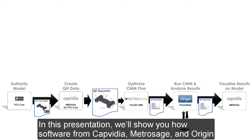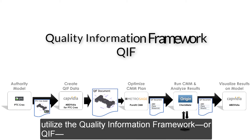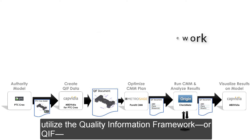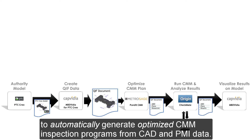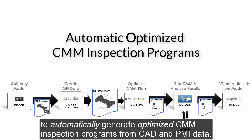In this presentation, we'll show you how software from Capvidia, Metrosage, and Origin utilize the Quality Information Framework, or QIF, to automatically generate optimized CMM inspection programs from CAD and PMI data.